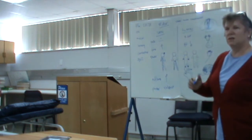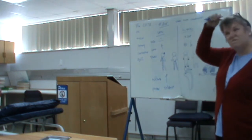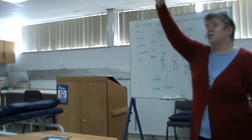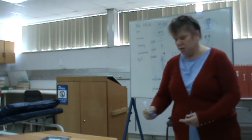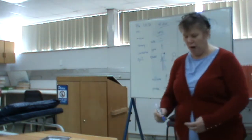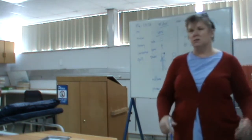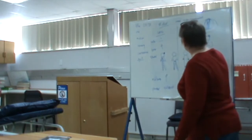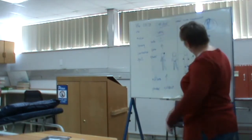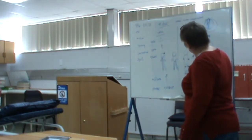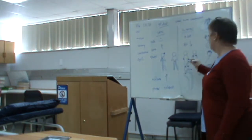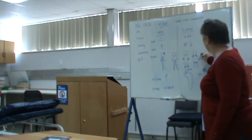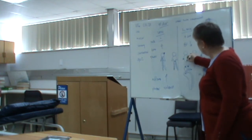Consider a patient who cannot comb his hair or reach something on a shelf, but can continue teaching, writing, and walking — though he struggles to stand from a chair and has a waddling gait. The distribution of weakness is proximal in the arms and legs, but walking is preserved. That is a myopathy.